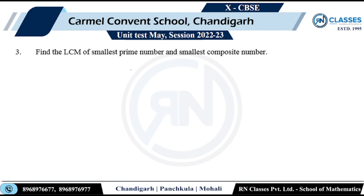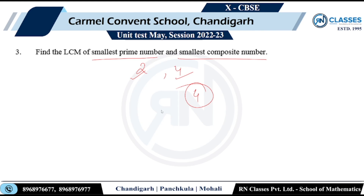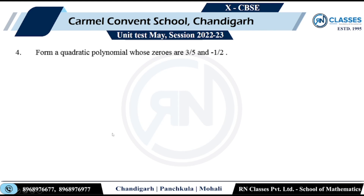Question three: find the LCM of the smallest prime number and the smallest composite number. The smallest prime number is 2 and the smallest composite number is 4. The LCM of 2 and 4 is 4.